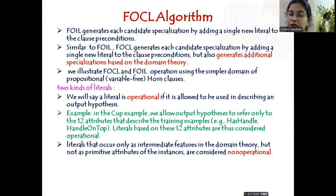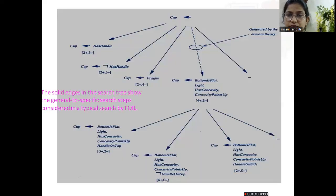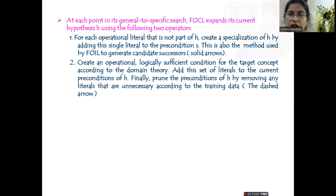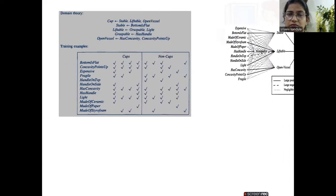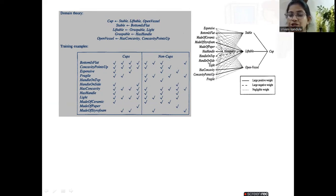For example, in the cup example, we allow the output hypothesis to refer only to 12 attributes present in the training examples. These 12 are the operational ones. Whereas literals that occur only as intermediate features in the domain theory are treated as non-operational — they are not primitive attributes. For example, stable, liftable, and open vessel are derived from these 12 primitive attributes, so those are the non-operational ones.